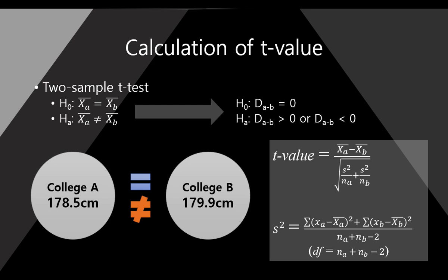So here, let's check the calculation of the t-value for two-sample T-Test. The t-value is like this: the numerator is the difference between the two means, two group means. And the standard deviation looks very difficult, but here s squared is calculated as this equation. And the degree of freedom is just the sum of the two groups minus two.